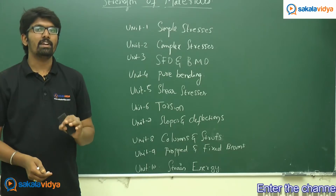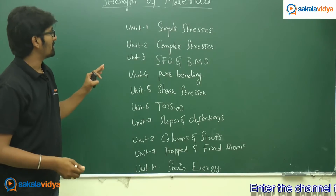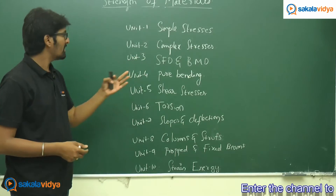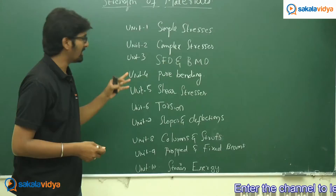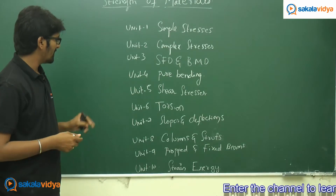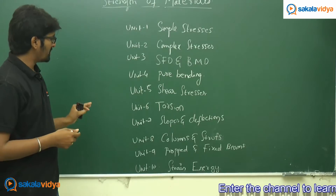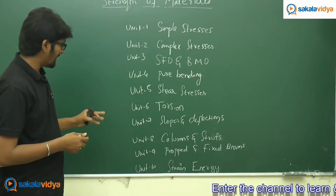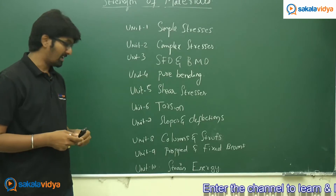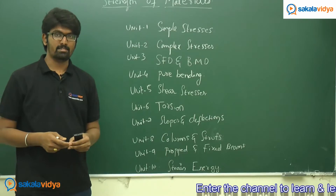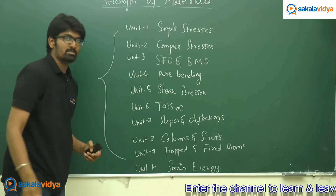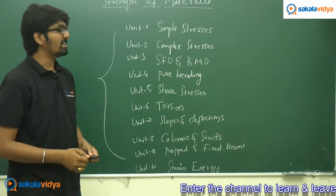Under Strength of Materials we are going to discuss: Unit 1 - Simple Stresses, Unit 2 - Complex Stresses, Unit 3 - Shear Force Diagram (SFD) and Bending Moment Diagram (BMD), Unit 4 - Pure Bending, Unit 5 - Shear Stress, Unit 6 - Torsion, Unit 7 - Slopes and Deflections, Unit 8 - Columns and Struts, Unit 9 - Propped and Fixed Beams, and Unit 10 - Strain Energy Theorems.